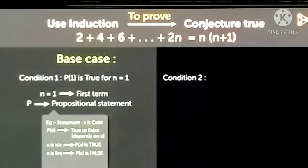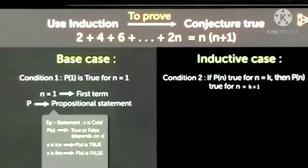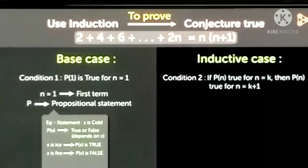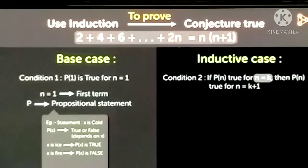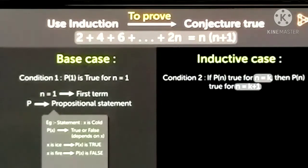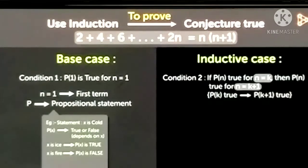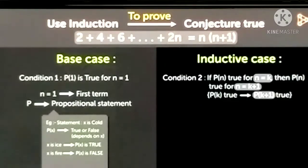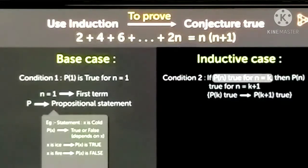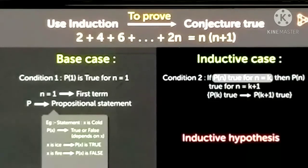In the first condition you have to show it is true for n equal to 1. The second case is the inductive case, when you replace n with k. In P(k) being true, you have to prove it for n equal to k plus 1. What we assume with n equal to k, we have to prove that P(k+1) is true. That is what we call the inductive hypothesis.